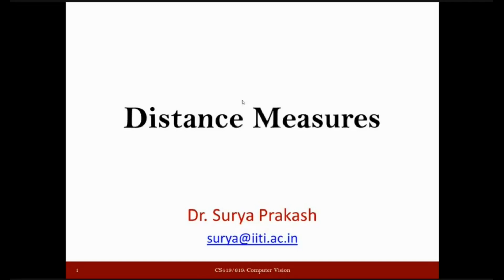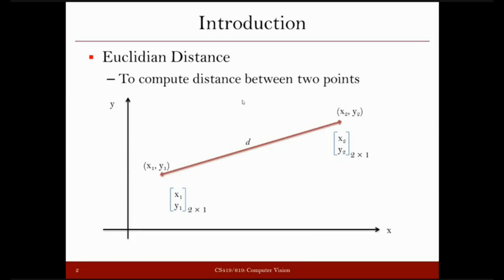Welcome to today's class. We are going to discuss distance measures. Let us first discuss one of the distance measures we are all familiar with from school days — the Euclidean distance. This is used to compute the distance between any two given points, and normally we use this for measuring points in 2D space. For example, one point has coordinates x1, y1 and another has x2, y2, and using the Euclidean distance formula we calculate distance d.